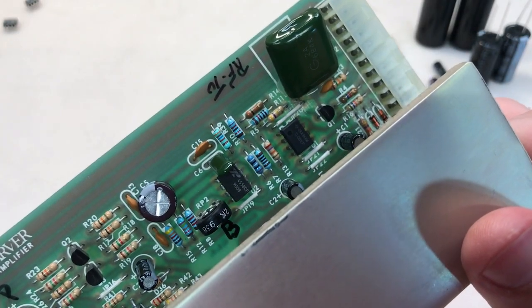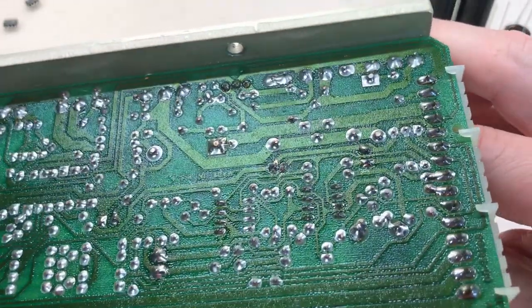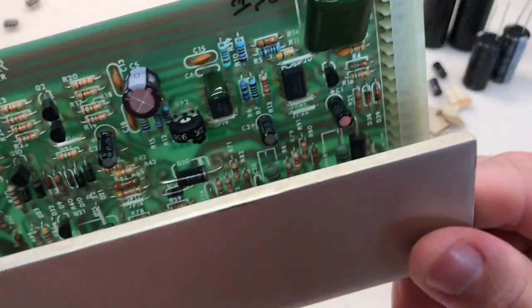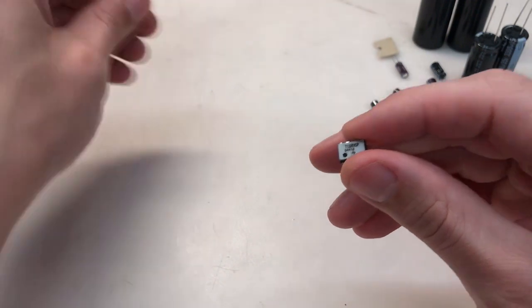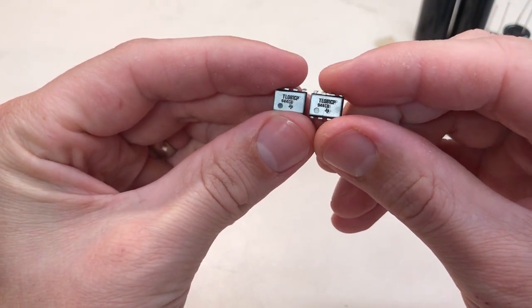Alright, U1 on both amp modules has been replaced. No surprises at all while doing this, pretty straightforward. I think they turned out well, and they should work really well. Nothing obviously wrong with either of the old ones, not that I would think there would be anything obviously wrong physically anyway.